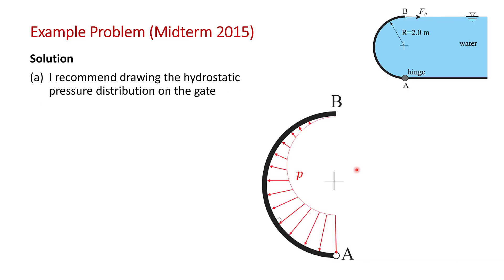It doesn't ask you to draw the hydrostatic pressure distribution on the gate, but I strongly recommend you get in the habit of doing this. Here's our gate AB and B is at the free surface, so the pressure goes to zero. I've drawn here using vectors the pressure distribution on this surface. It would be high at A and zero at B, and all along the surface it would be normal to surface AB.